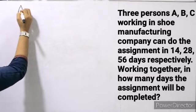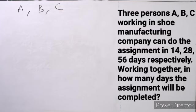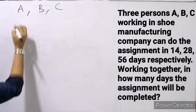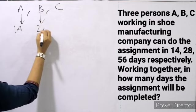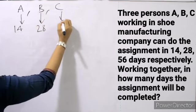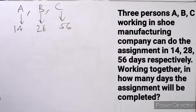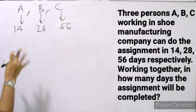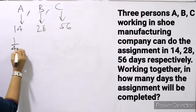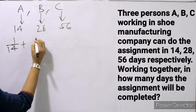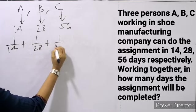3 persons A, B and C are working in a shoe manufacturing company. A can finish the work in 14 days, B can finish the same work in 28 days, and C can do the same work in 56 days. In how many days will the assignment be completed if they work together? In 1 day: A does 1 by 14, B does 1 upon 28, and C does 1 upon 56.